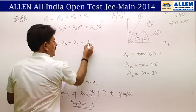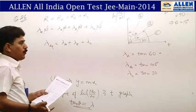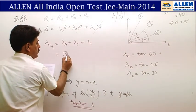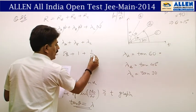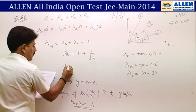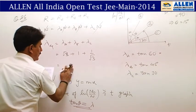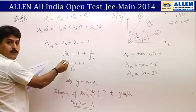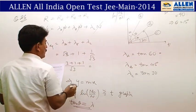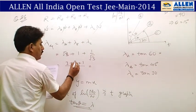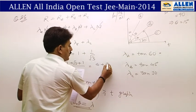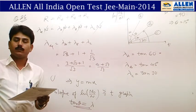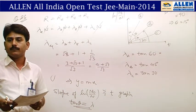Putting in the values: λ_A = tan 60° = √3, λ_B = tan 45° = 1, λ_C = tan 30° = 1/√3. Taking LCM √3: we get (√3·√3 + 1·√3 + 1) / √3 = (3 + √3 + 1)/√3 = (4 + √3)/√3. Simplifying gives the answer as the fourth option.